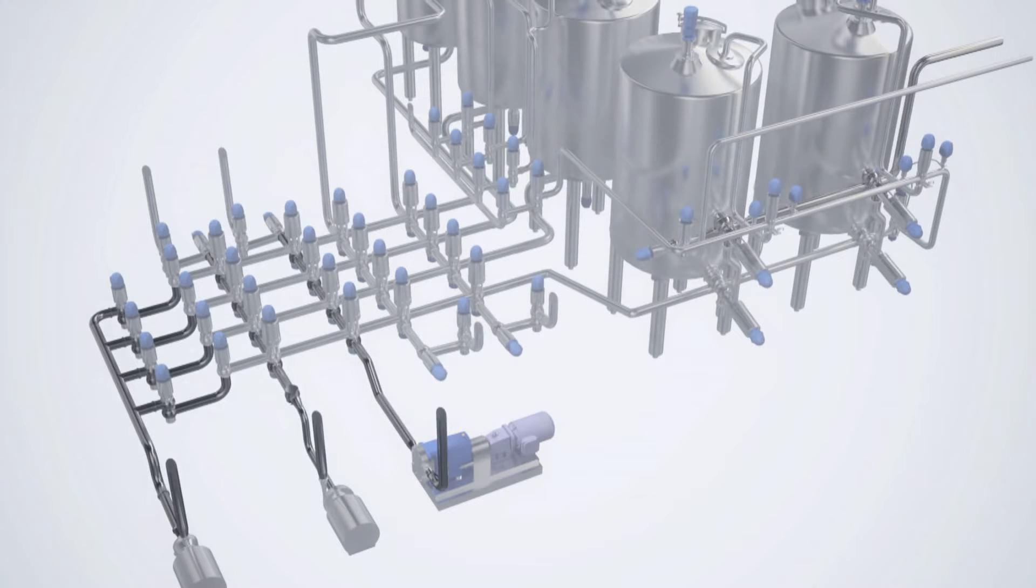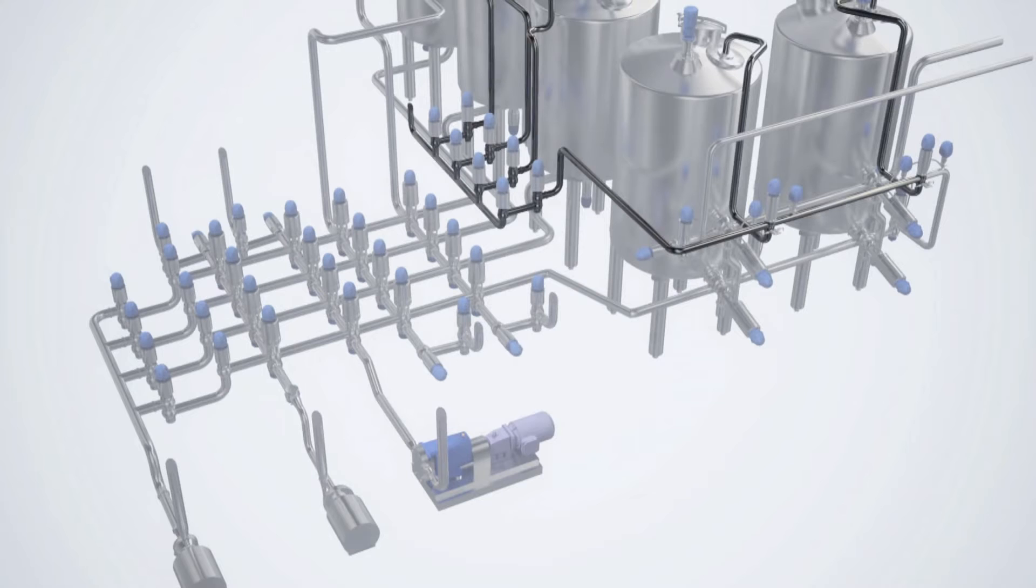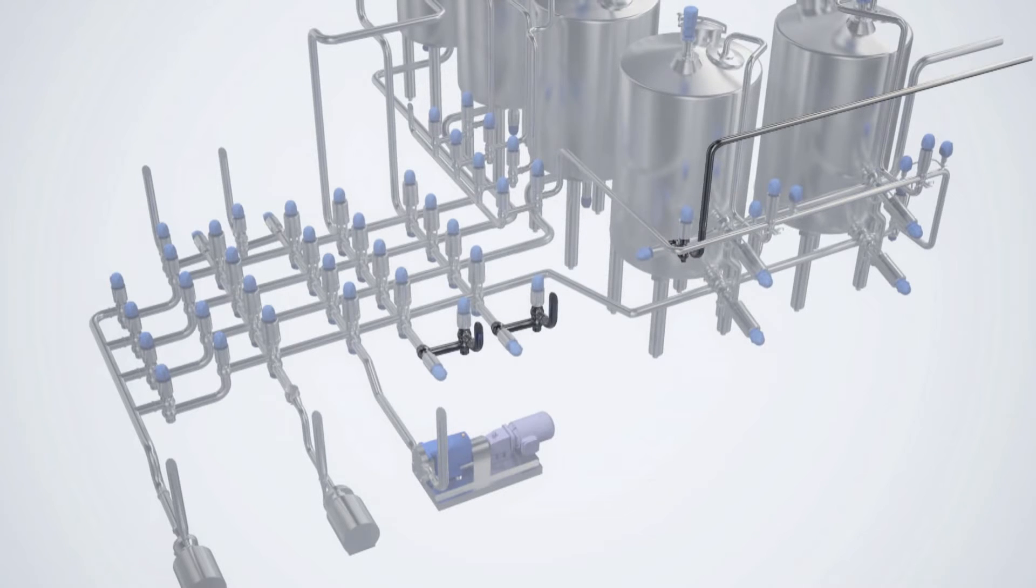There are three destinations including one common CIP return line. Destinations could be fillers, pasteurizers, or blend systems. All five tanks share a common CIP supply line. The product supply line is equipped with CIP return valves and the product destination lines are supplied with CIP forward valves.